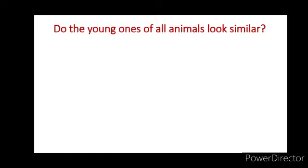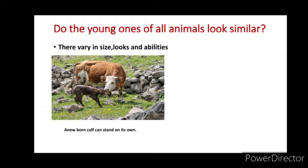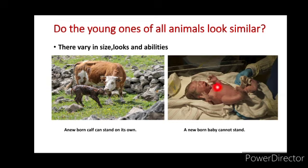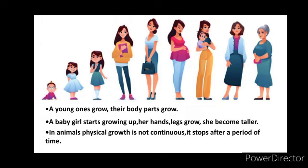Do the young ones of all animals look similar? Certainly not — they vary in size, looks, and abilities. For example, a newborn calf can stand on its own, but a newborn human baby cannot stand. As the young ones grow, their body parts grow too.